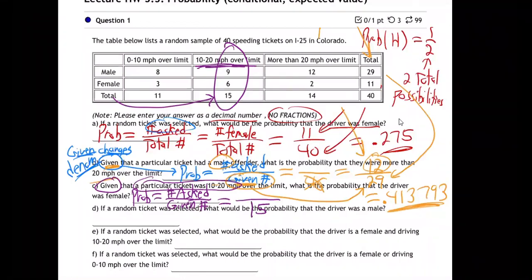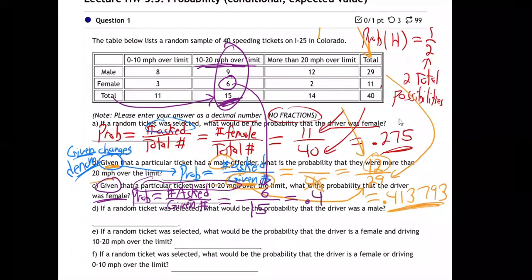15 is our denominator because that's the given number of tickets that are 10 to 20 over. So out of those 15 tickets, we know we're given that a particular ticket was 10 to 20 over. So the ticket was 10 to 20 over — what's the probability it was a female? Out of those 15 tickets that were 10 to 20 miles over, how many of those were female? Six out of 15, giving us 0.4.